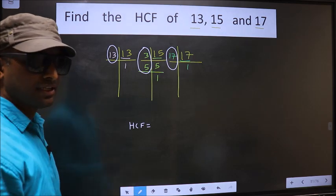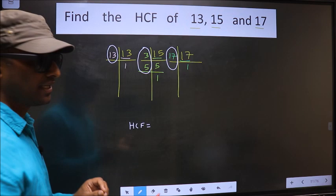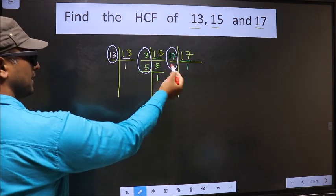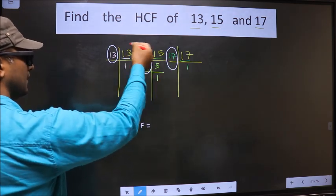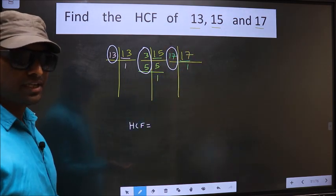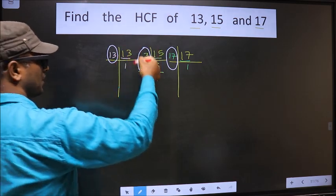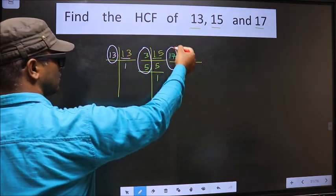I repeat: HCF is the product of numbers which should be present in these three places - here, here, and also here. So now let us find the numbers which are present here and here and also here.